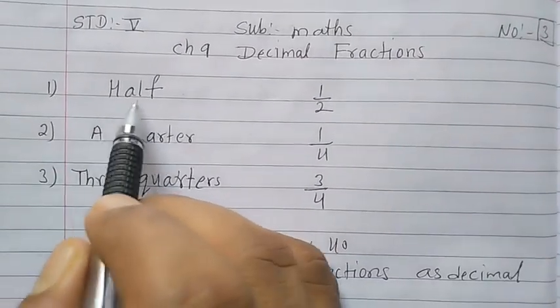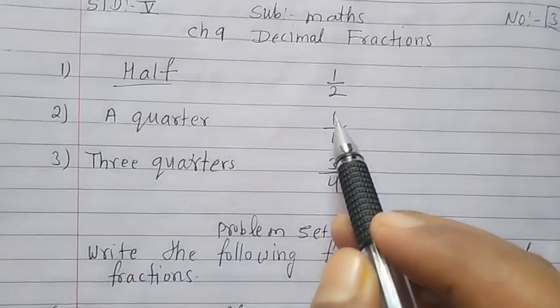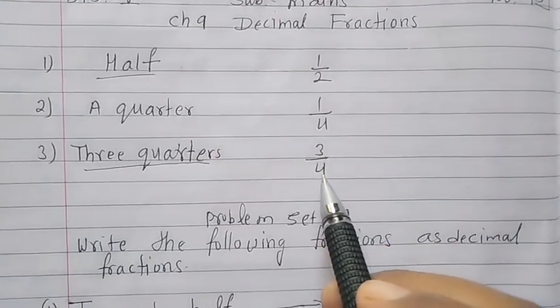Now here half, we have to write 1 upon 2. Second, a quarter, quarter means 1 upon 4, and three quarters, three quarters means 3 upon 4.